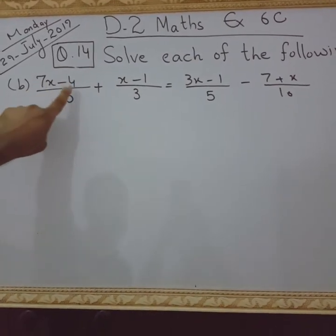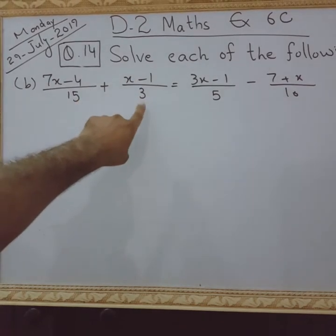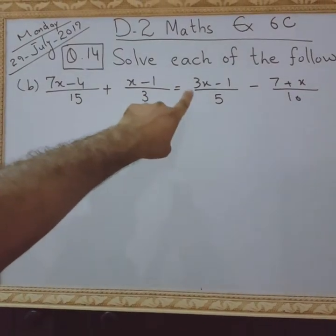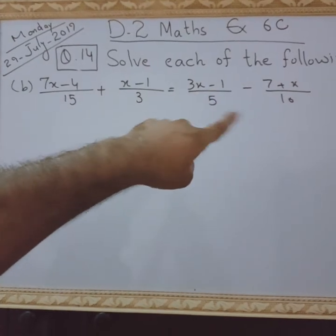7x minus 4 over 15 plus x minus 1 over 3 is equal to 3x minus 1 over 5 minus 7 plus x over 10.